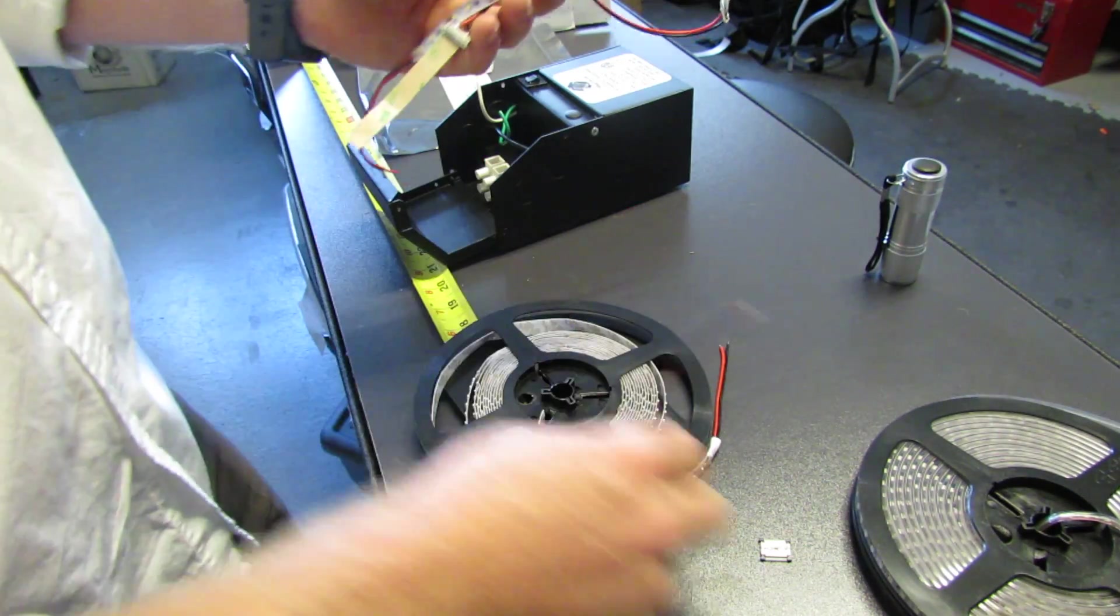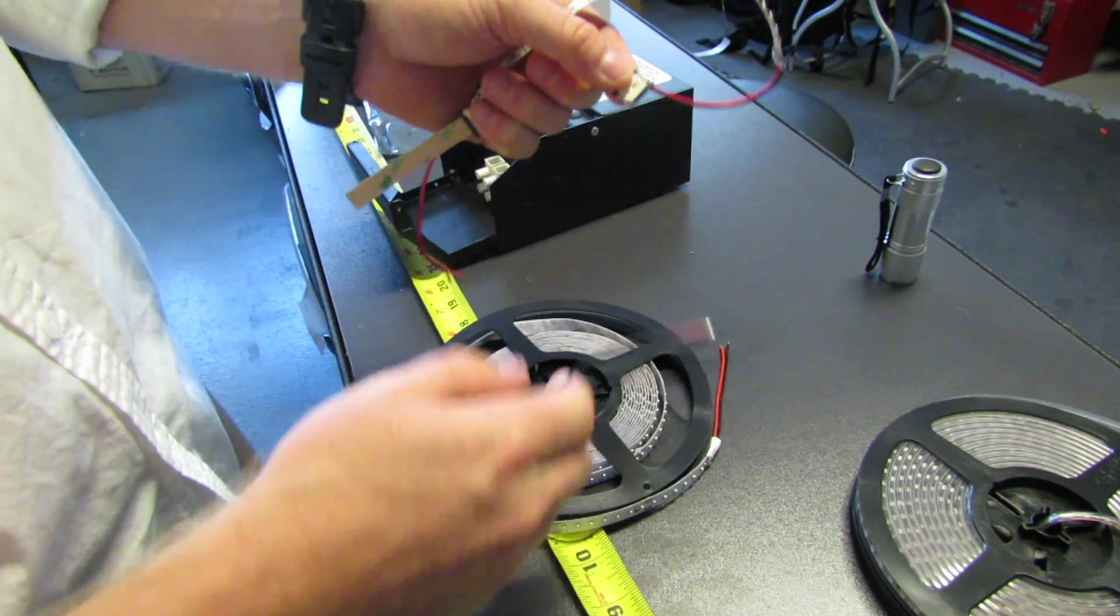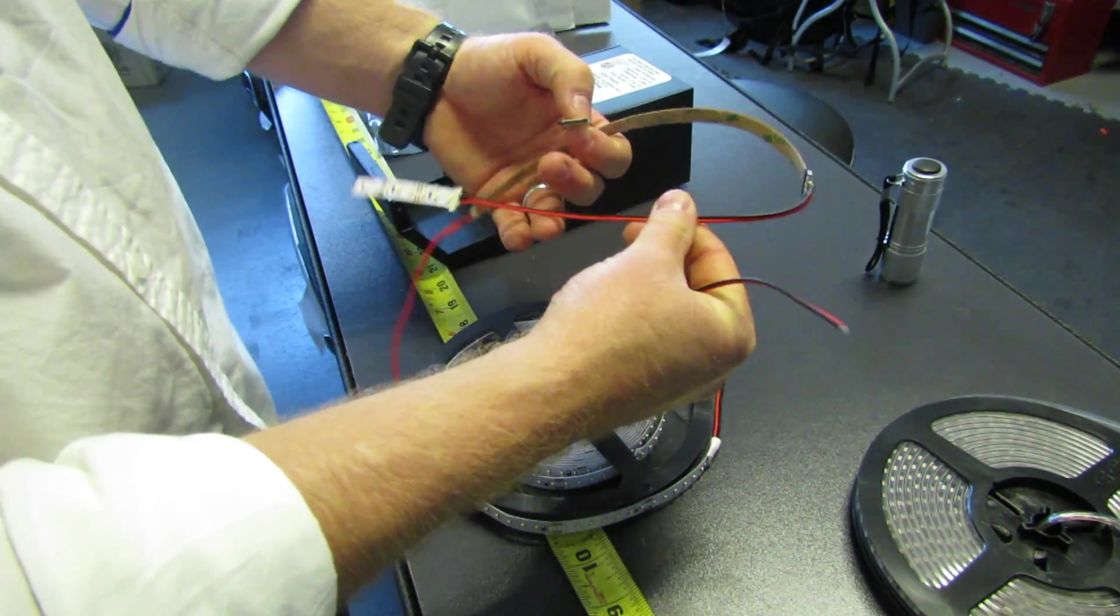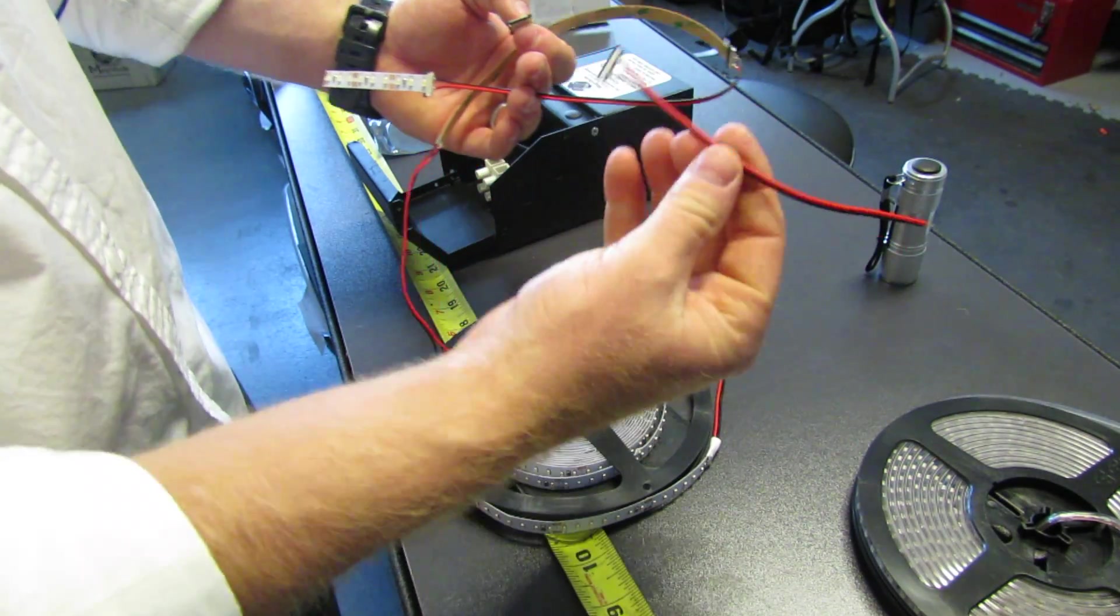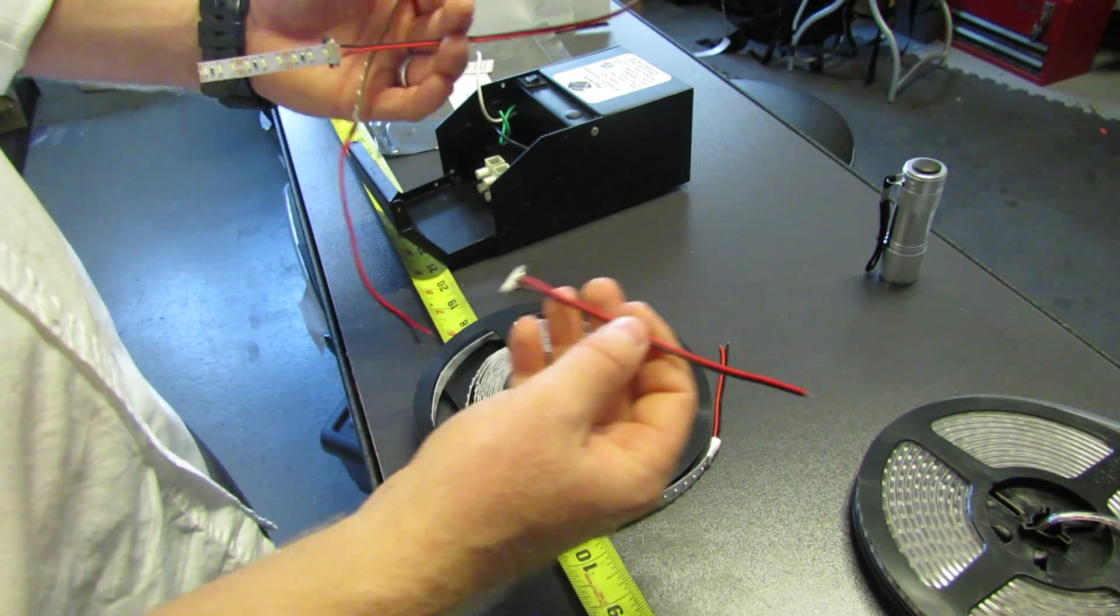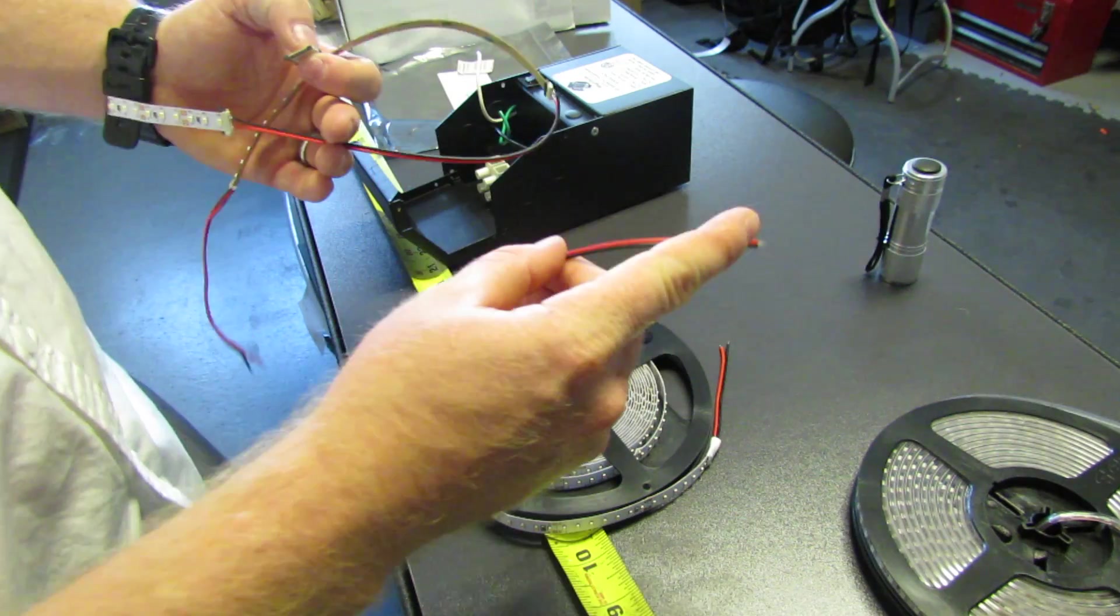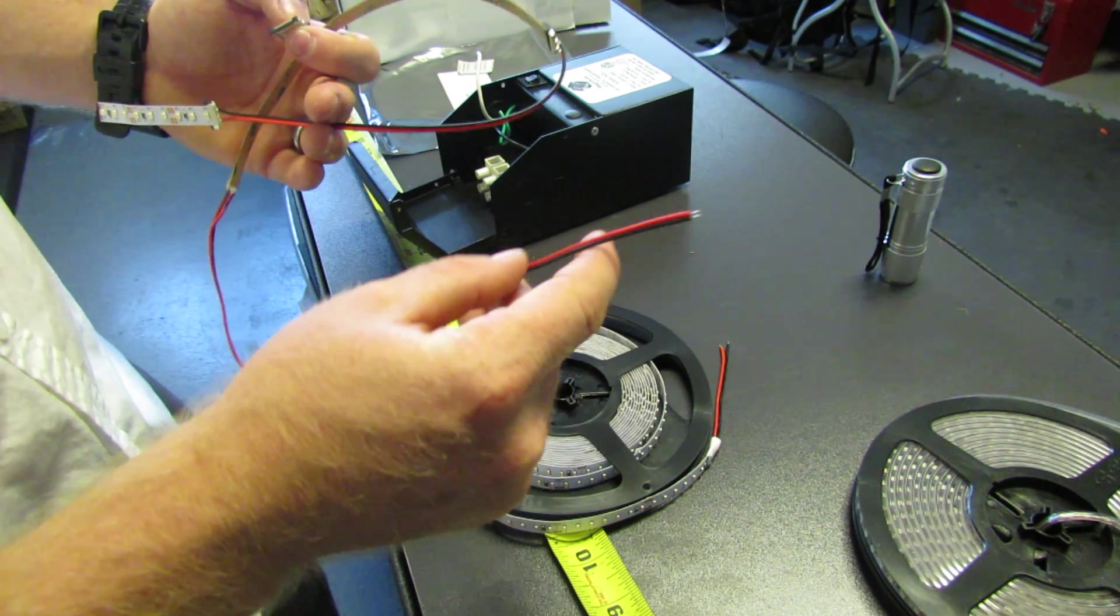So you have three different types of connectors. You have this strip to strip with no wire. You have a strip to strip with wire and you have a, we call it strip to power. So if you had a small segment or something you want to hook directly up the transformer, you can use this and wire it right in.